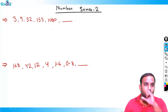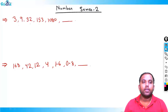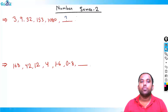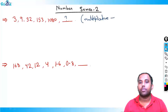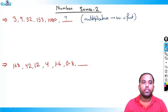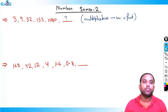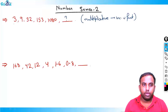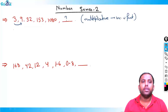Okay, let's solve it now. The series is: 3, 9, 32, 153, 1080, and something. What is that number? The first thing that should come to mind is that it's a multiplicative series, because the series is increasing very fast — 3, 9, 32, 153, 3080 — increasing very fast, so something is getting multiplied.